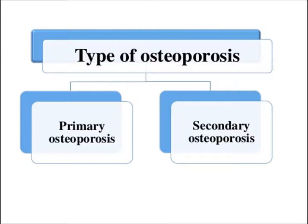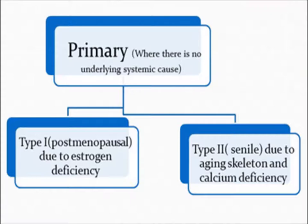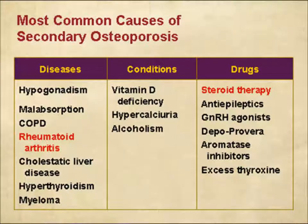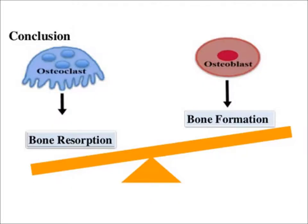There are two types of osteoporosis: primary and secondary. Primary osteoporosis has no underlying systemic cause and includes two main types — type 1 postmenopausal, due to estrogen deficiency, and type 2 senile, due to aging skeleton and calcium deficiency. The most common causes of secondary osteoporosis are rheumatoid arthritis and steroid therapy, leading to more bone resorption than bone formation.